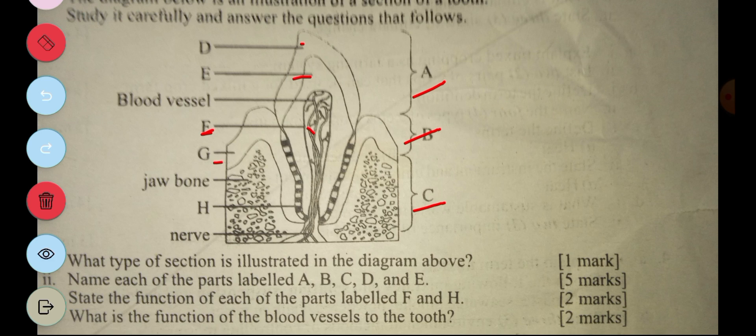So the III says state the function of each of the parts labeled F and H. So the parts labeled F, F is the pulp, the pulp provides nourishment and nourishment for the tooth. Then the H, the H is called a cementum, the H, it provides attachment for periodontal ligaments and also it supports the tooth within the jaw. The next question is what is the function of the blood vessels to the tooth. So the blood vessels supplies oxygen and nutrients as well as food to the tooth.